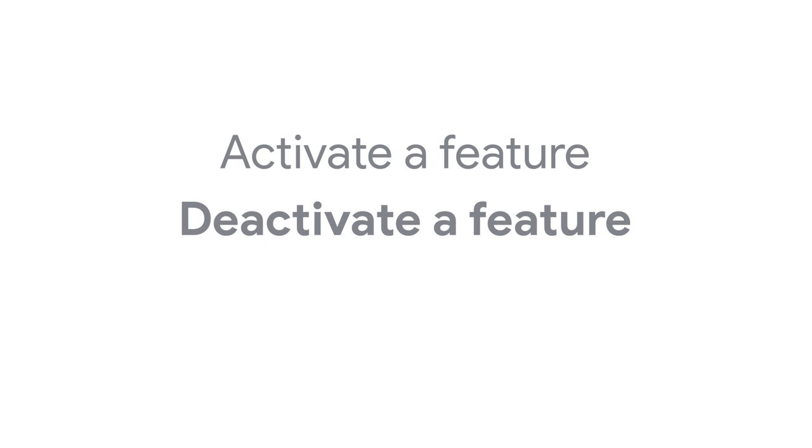Chrome Variations can also be used — though this happens more rarely — as a safety mechanism to deactivate a feature. For example, a new networking feature might become subject to a denial of service attack. Chrome Variations can be used to quickly turn off a feature like that, since the Variations configuration is downloaded every 30 minutes and settings are activated every time you restart Chrome. By contrast, simply updating Chrome and waiting for the new version to propagate to billions of users would be much slower.